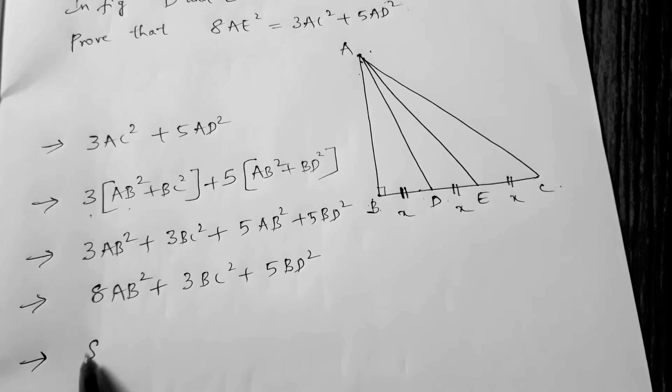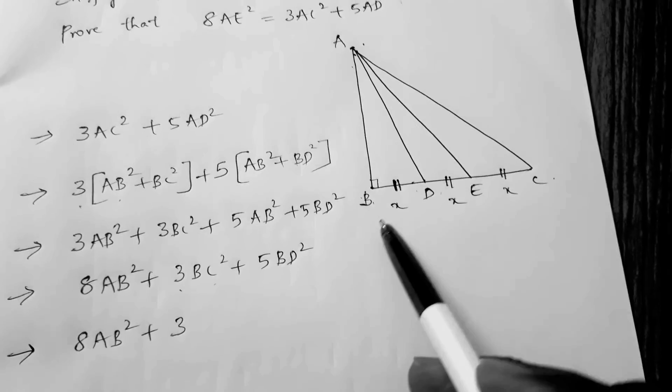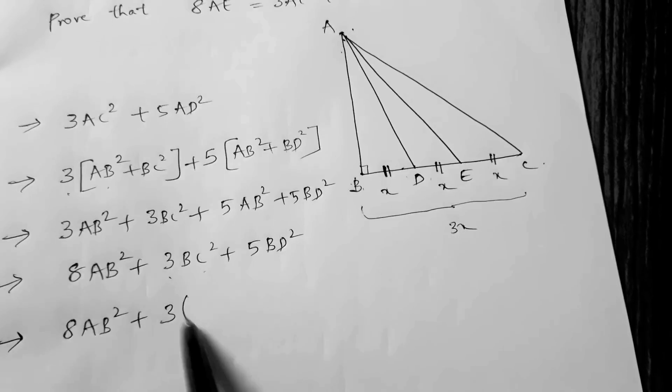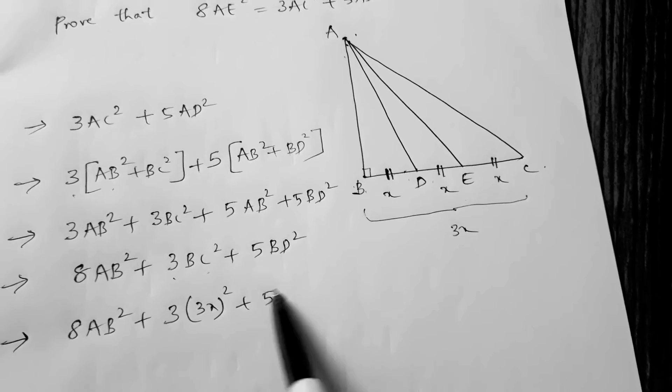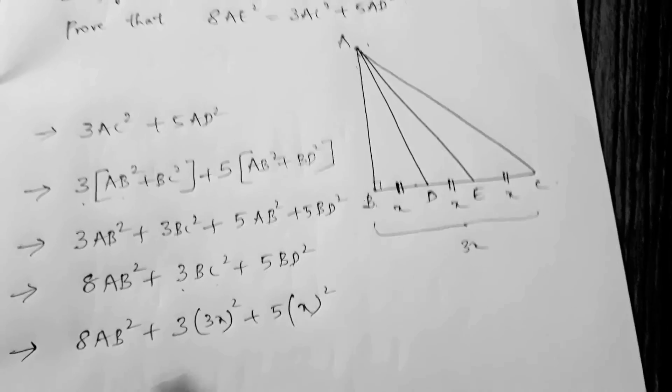Now, 8AB² plus 3BC². BC is nothing but 3X, so you can write 3 times (3X)² plus 5BD. BD is nothing but X².